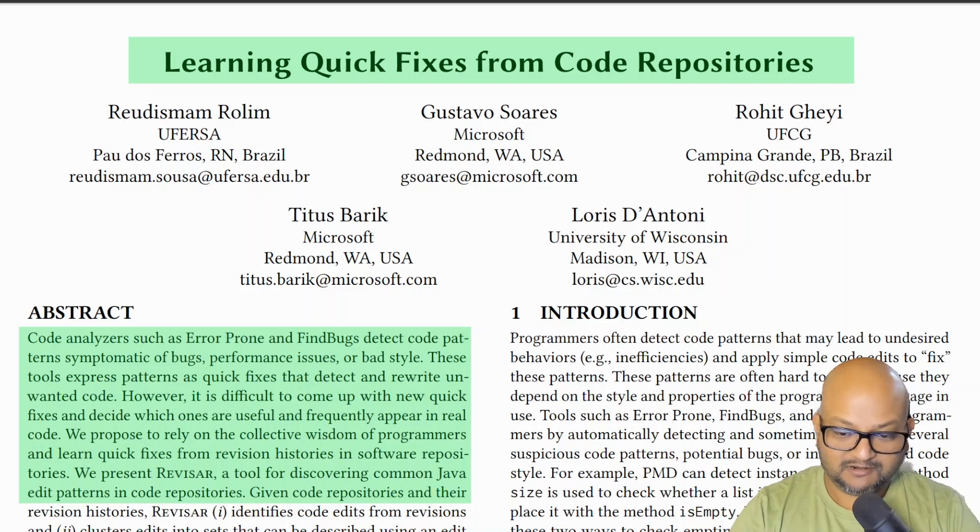By now most developers are familiar with tools like Error Prone and FindBugs that find minor anti-patterns in your code and suggest quick fixes.